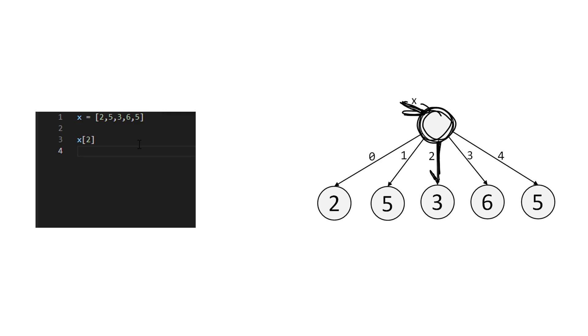So it looks for an edge with a 2 on it, and it goes here. The computer ended up at 3, and so that's what it's going to give you as the value of x of 2.